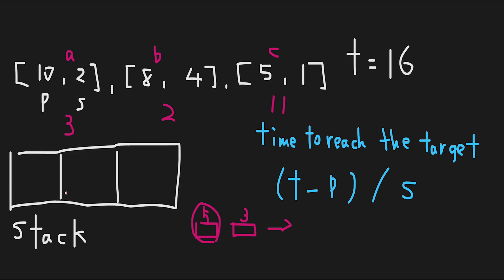Let's walk through it. A needs 3 minutes. The stack is empty, so A is a car fleet — push 3 onto the stack. For B: B needs 2 minutes. The stack has 3. Since B's time (2) is less than 3, B will catch up to A, so we don't push 2. The value 3 still represents one car fleet, because A and B are now the same fleet.